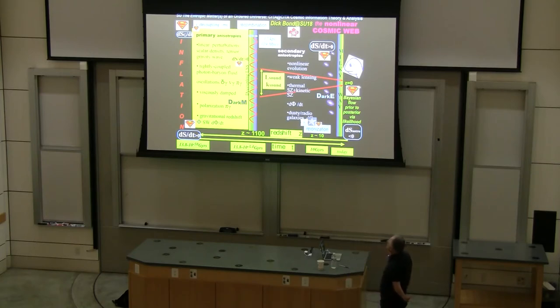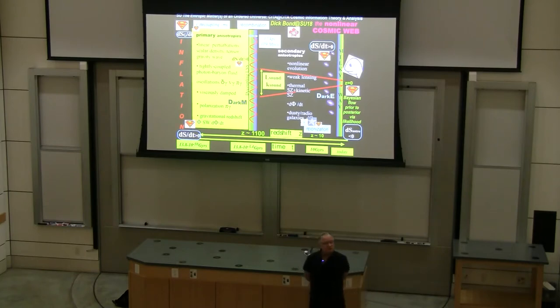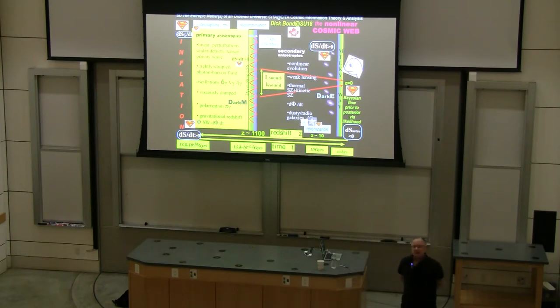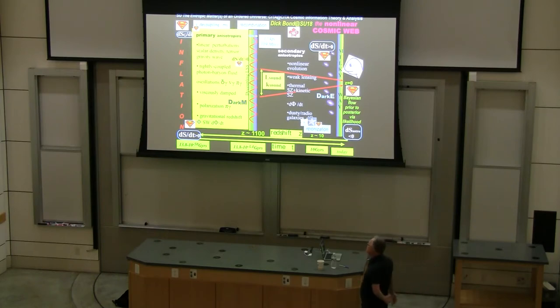But then nonlinearity develops. And that creates what we call the cosmic web. It is what causes light bulbs to shine up and therefore we get to see things. So this generates what are called secondary anisotropies as opposed to the primary anisotropies that reflect exactly the fluctuations laid down in inflation. So do the secondary anisotropies, but in a complex way. So nonlinear evolution, one of the things that occurs is that the light cones are corrugated and that creates a weak lens.